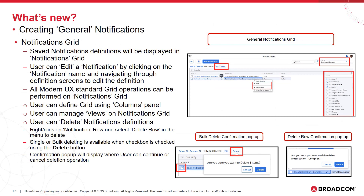What's new — General Notifications grid. Saved notification definitions will be displayed in the notifications grid. Users can edit a notification by clicking on the notification name and navigating through the definition screens. All Modern UX standard grid operations can be performed on the notifications grid. Users can define the grid using the columns panel, manage views, and delete notification definitions by opening the context menu on a row and selecting Delete Row. Single or bulk deletion is available using checkboxes and the delete button. A confirmation pop-up will display where the user can continue or cancel the deletion operation.